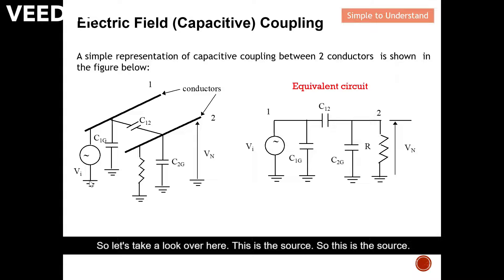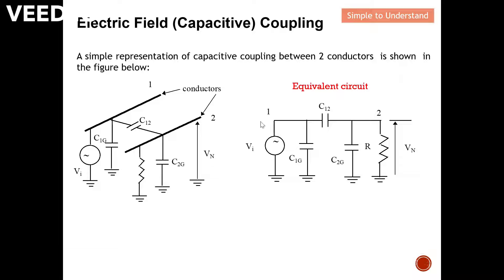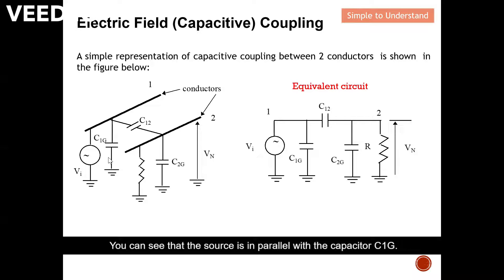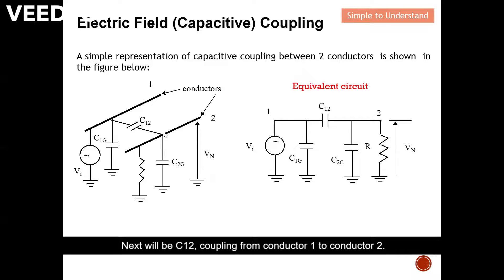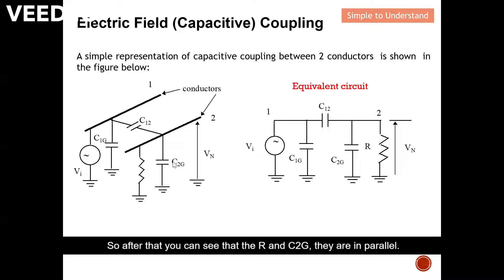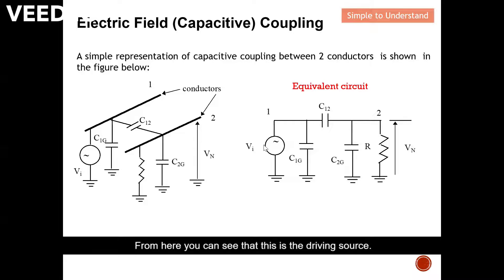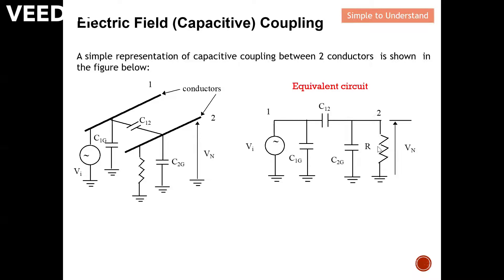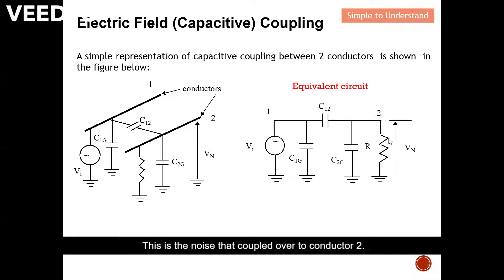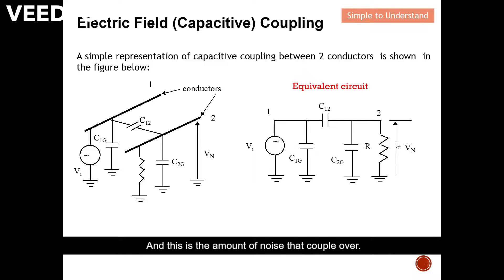So how can we derive this equivalent circuit? The source is in parallel with capacitor C1G — you can see that the source is in parallel with C1G. Next is C1G, which represents coupling from conductor 1 to conductor 2. After that, you can see that R and C2G are in parallel. So I reproduce that here. This is how we derive the equivalent circuit. From here, this is the driving source, and this is the noise that coupled over to conductor 2 — from the 1st conductor coupled to the 2nd conductor. This is the amount of noise that coupled over.